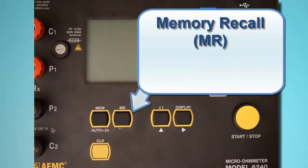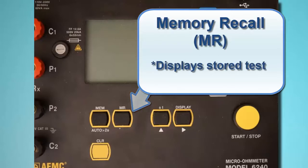To the right of the memory button is the Memory Recall button, labeled MR. This displays records stored in memory.